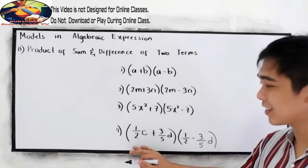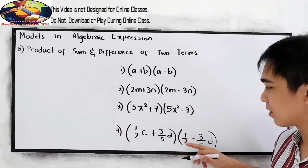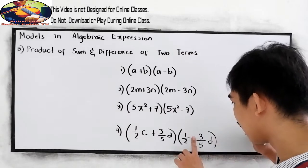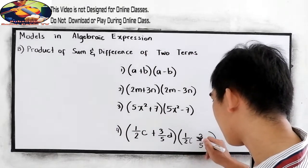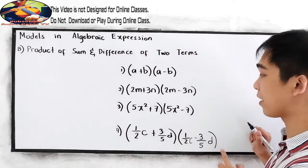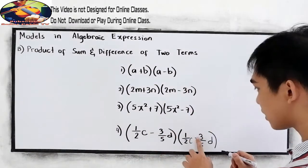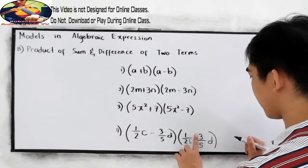And number four, fraction, one half C plus three over five D times one half C minus three over five D. So it can also be interchanged. It can be minus here, then plus on the other expression.